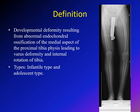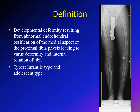Blount disease is a developmental deformity — it's not congenital. The child is not born with it. It results from abnormal growth of the proximal tibial growth plate, or proximal tibial physis, on the medial side. The medial part will not grow normally, while the lateral side continues growing, resulting in the limb pointing inward — a varus deformity — and in most cases, associated internal tibial torsion.